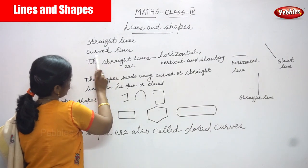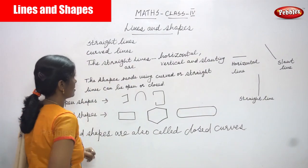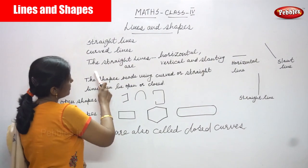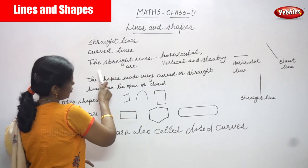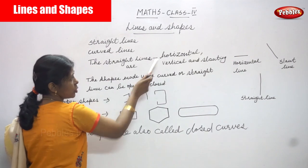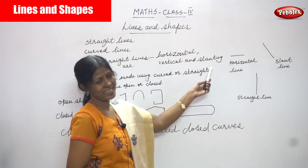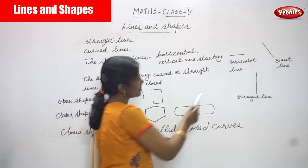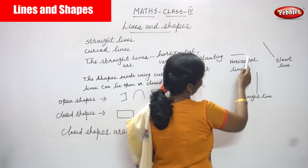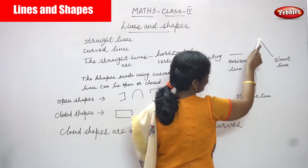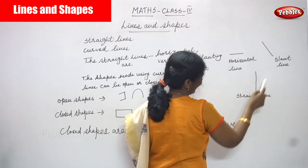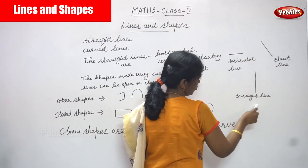One is straight lines and another one is curved lines. Straight lines are horizontal lines, vertical lines, and slanting lines. This is a horizontal line, this is a slanting line, and this is a vertical straight line.